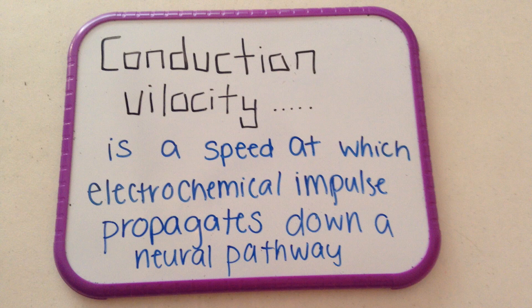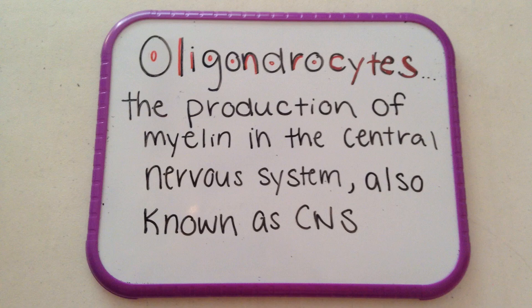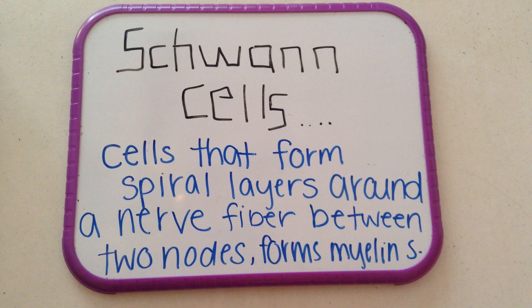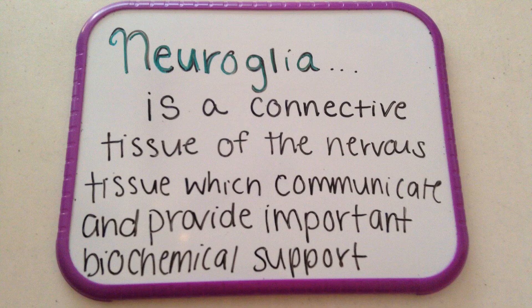Another way is by increasing the distance along the axon. This is proven by the myelination of axons. This is when oligodendrocytes, which are responsible for the production of myelin in the central nervous system, also known as the CNS, and Schwann cells, which are cells that form spiral layers around a nerve fiber between two nodes and form a myelin sheath in the peripheral nervous system, also known as the PNS. Neuroglia is the connective tissue of nervous tissue, which communicates and provides important biochemical support to neurons in the CNS.